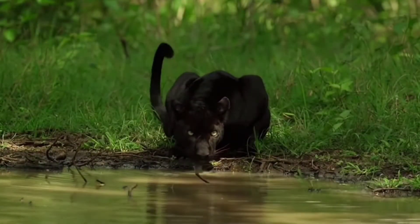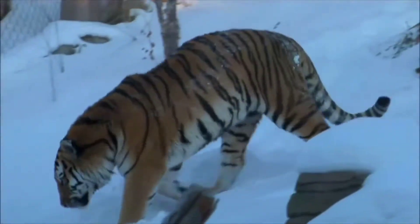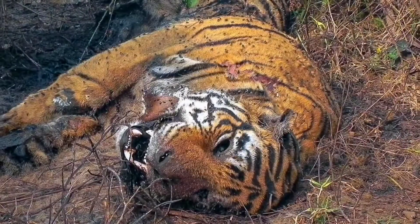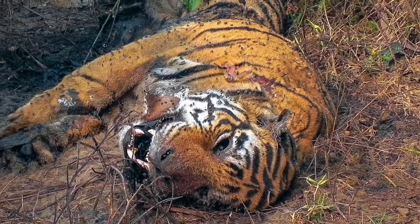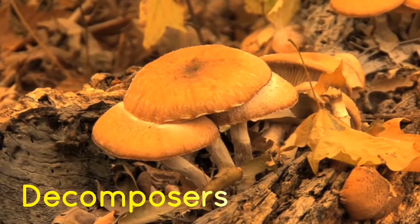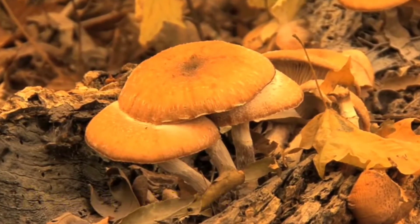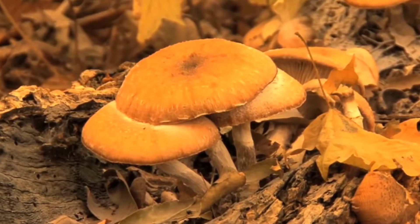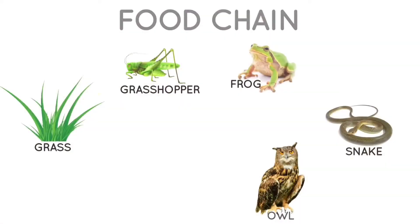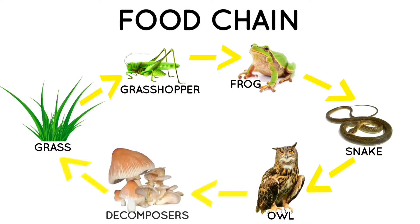Just because they don't get eaten doesn't mean they don't contribute to the food chain, however. When an animal dies, their body is broken down by decomposers. Decomposers are usually bacteria and fungi that break down dead plants and animals into nutrients in the soil, which in turn help the plants at the beginning of the food chain to grow. It's the circle of life.